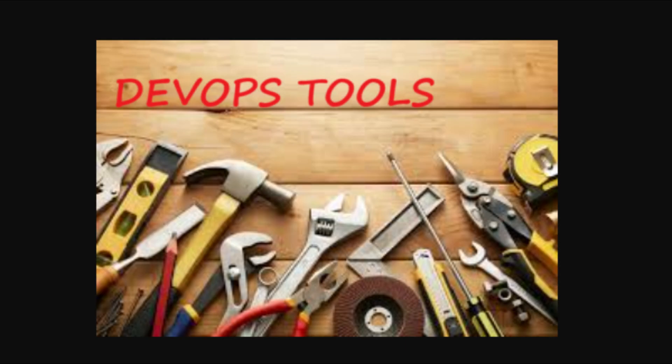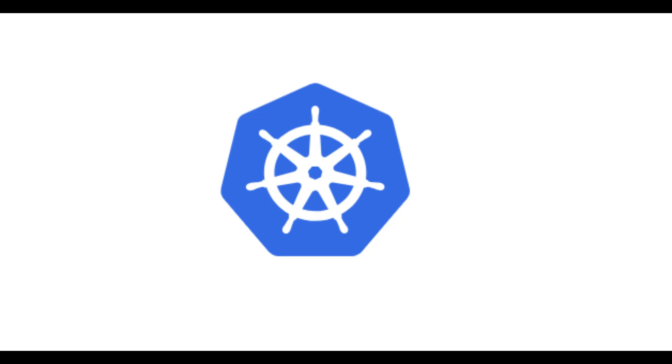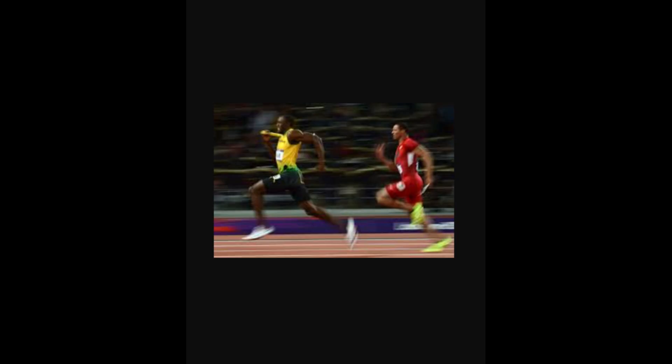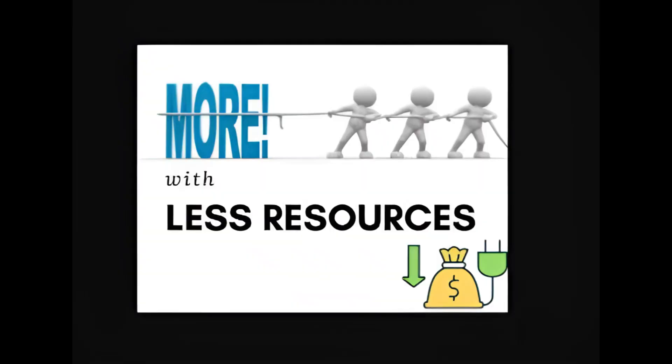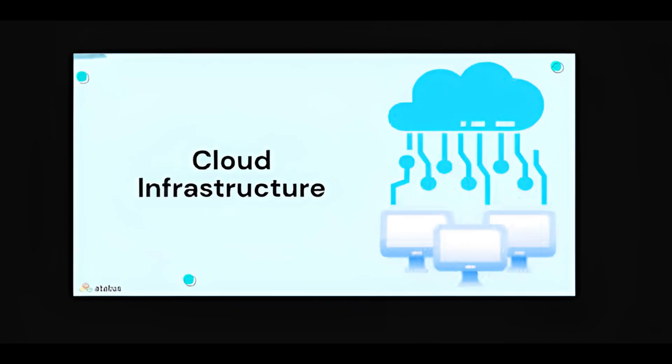What can you build with Go? Most of the DevOps tools like Docker, Kubernetes, and Terraform are built using Go because these tools need to be fast, efficient and scalable, and Golang is built for this purpose. Go uses less CPU and memory when compared to other programming languages, and that's why it is heavily used in managing cloud infrastructure.